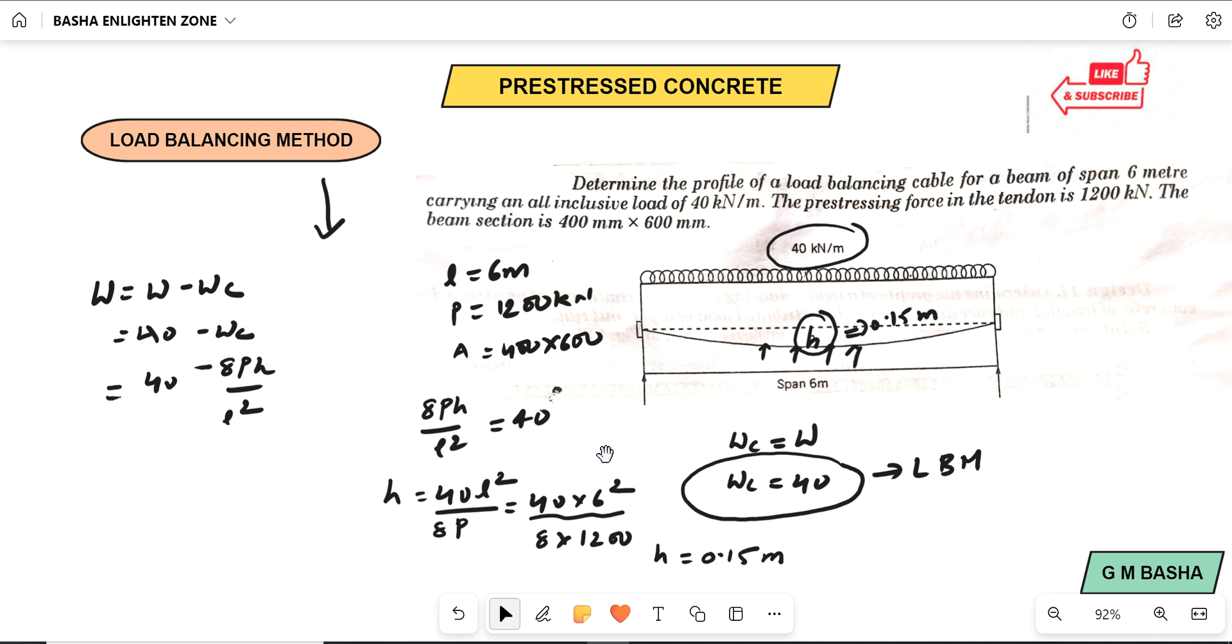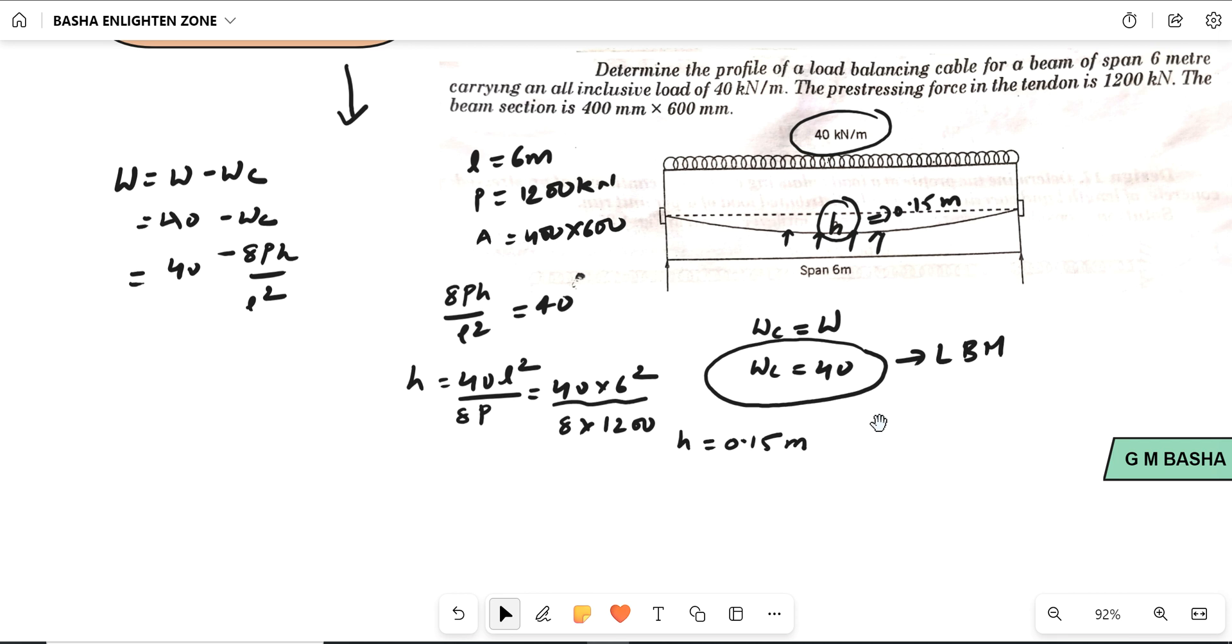What are the uniform stresses acting here? If you want, you can find the uniform stresses also. We know P by A. That one will be equal to 1200 in terms of 10 to the power of 3. Area will be equal to 24 into 10 to the power of 4, which is 400 by 600, 10 to the power of 4. Approximately you will get 5 Newton per mm square, which is compressive.